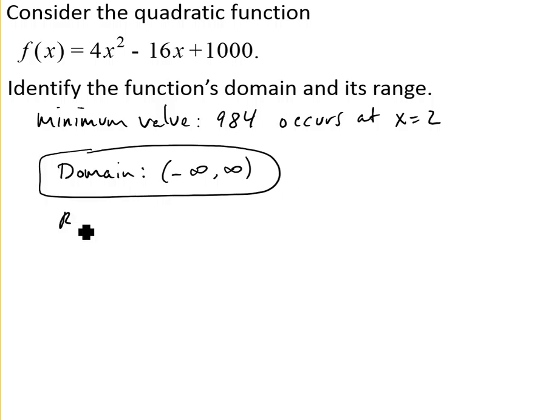The range is affected by the minimum value. There are no y-coordinates below 984—they're all above it. So the range starts at 984.